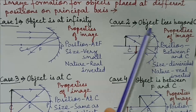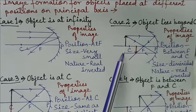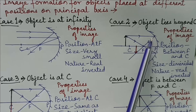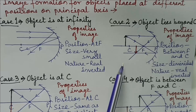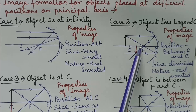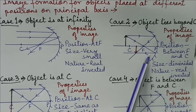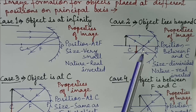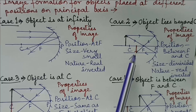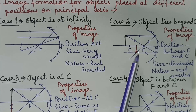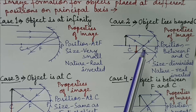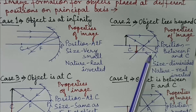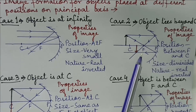Case 2: When the object lies beyond center of curvature. The first ray coming parallel to principal axis after reflection passes through focus. The second ray passing through focus after reflection passes parallel to principal axis. At the point of intersection of these two rays, image is formed between focus and center of curvature. The size is diminished and nature is real and inverted.